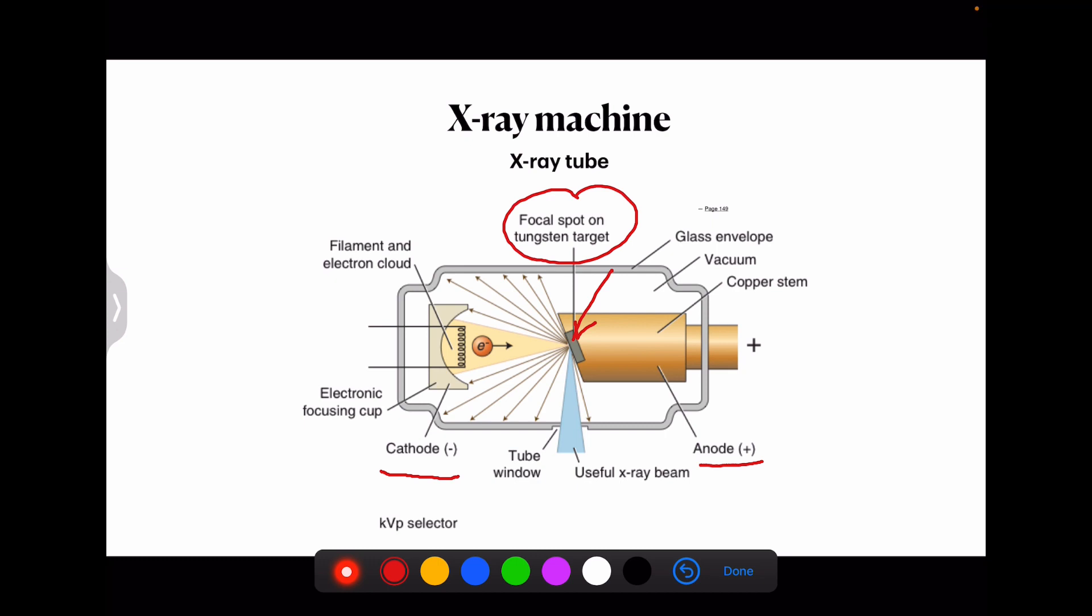Then is the anode. Basically the tungsten target converts the kinetic energy of the electrons generated from the filament into x-ray photons. The focal spot is the area on the target onto which the focusing cup directs these electrons. As the size of the focal spot decreases, the sharpness of the radiographic image increases.